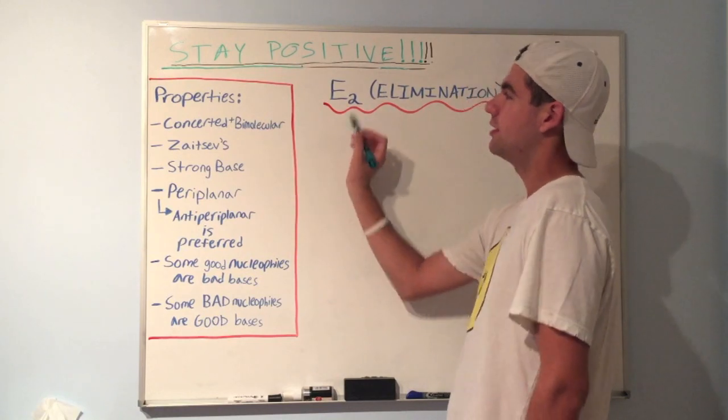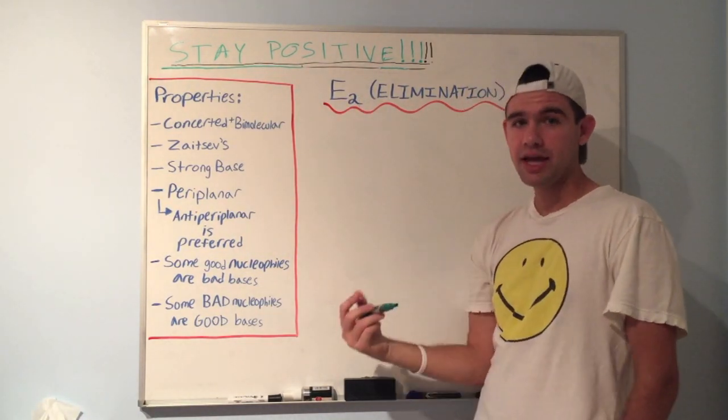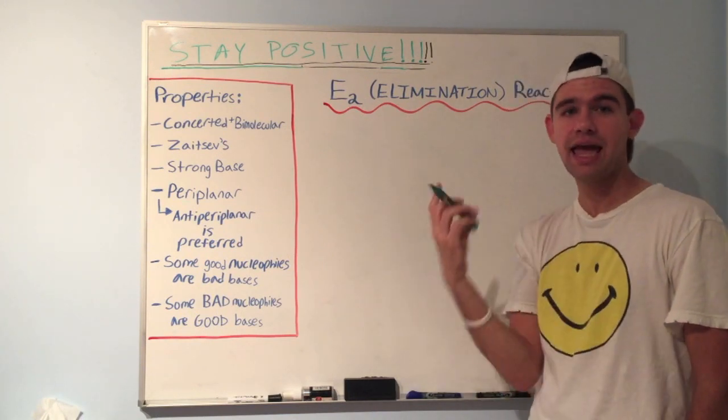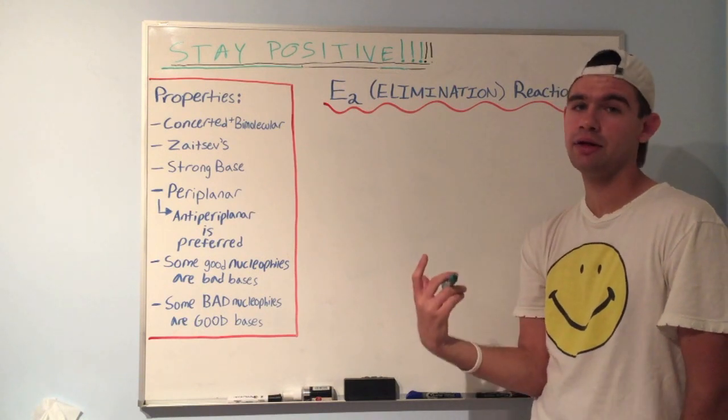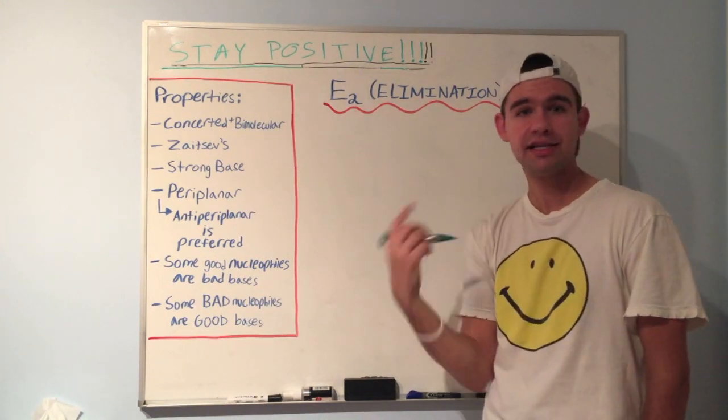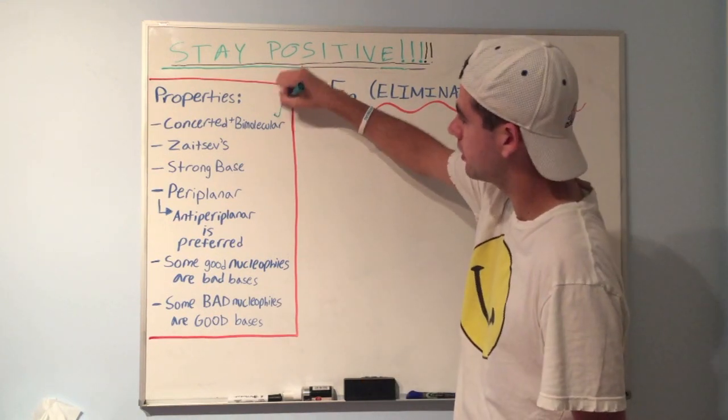When we say it's bimolecular, and that's what the 2 is for, by the way, we're saying that the rate of the reaction depends on two things. It depends on the concentration of the base and the concentration of the substrate. So that's what we mean when we say it's bimolecular. Remember, SN2, just like E2, is also bimolecular.